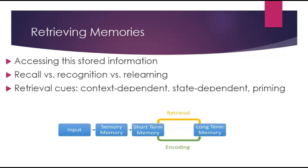When it comes to retrieving memories, recall is retrieving information without any cues, like writing an essay on a test. Recognition is identifying correct information from options, such as multiple choice. Relearning measures how much faster you can learn something a second time — like studying for a final exam, you already learned the material before, so it's going to be faster the second time.